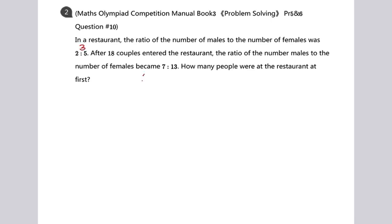So 3 here, 5 minus 2 is 3, and 13 minus 7 is 6. And we want to find the least common multiple of 3 and 6, which is 6. So we can convert 2 to 5 to 4 to 10. And that means the difference between them to be 6. And we keep the other ratio.